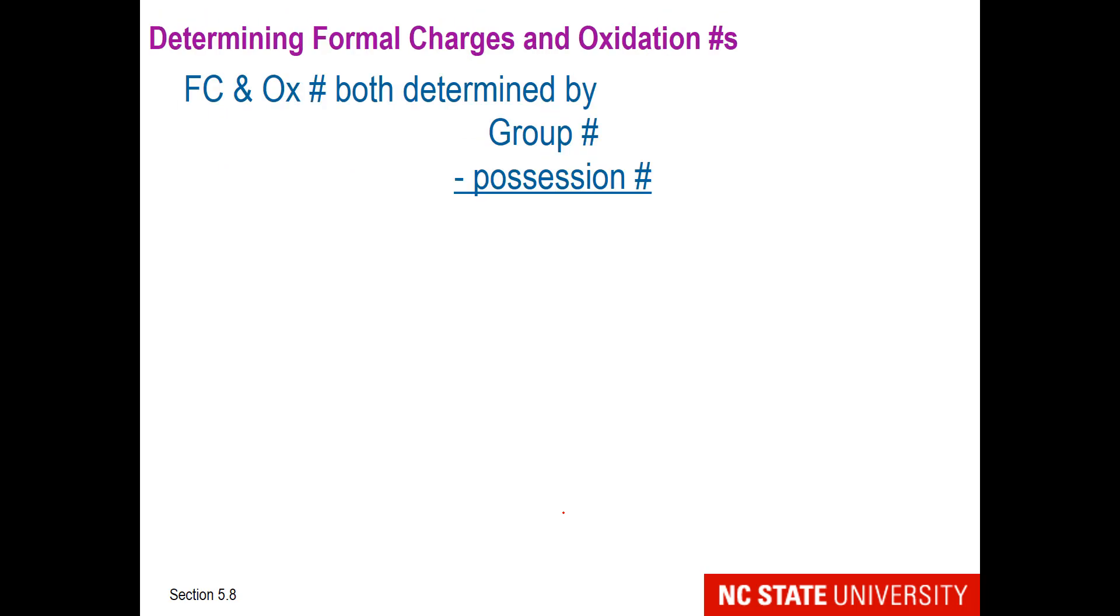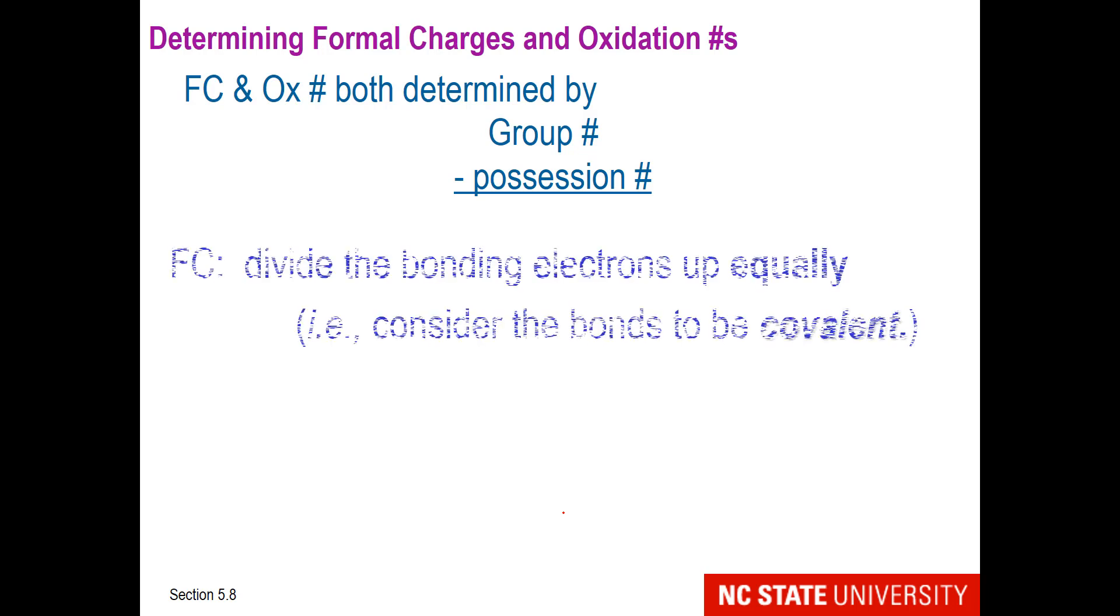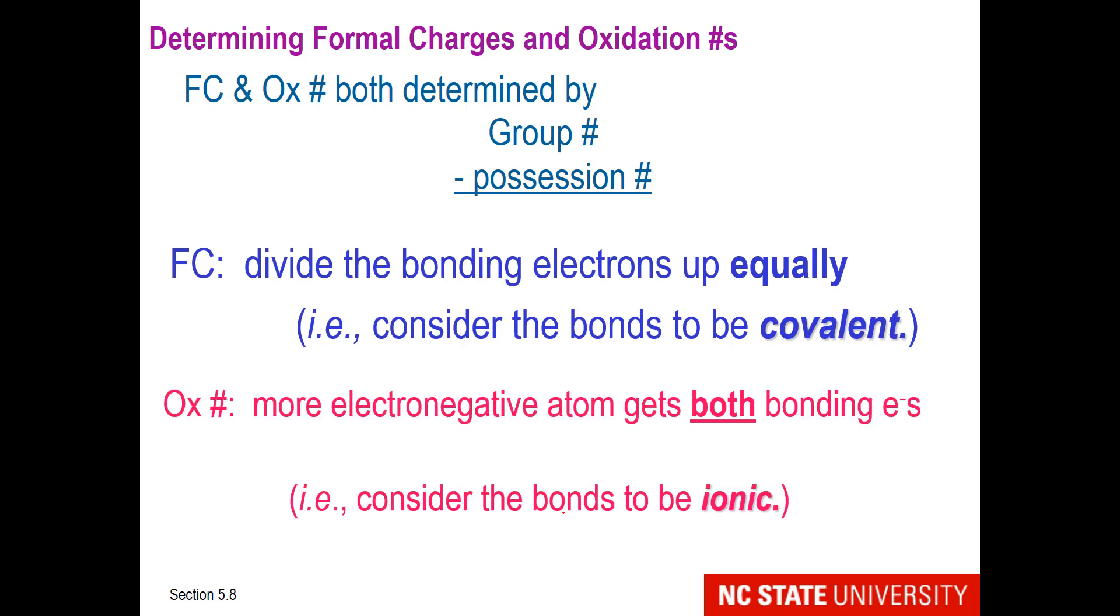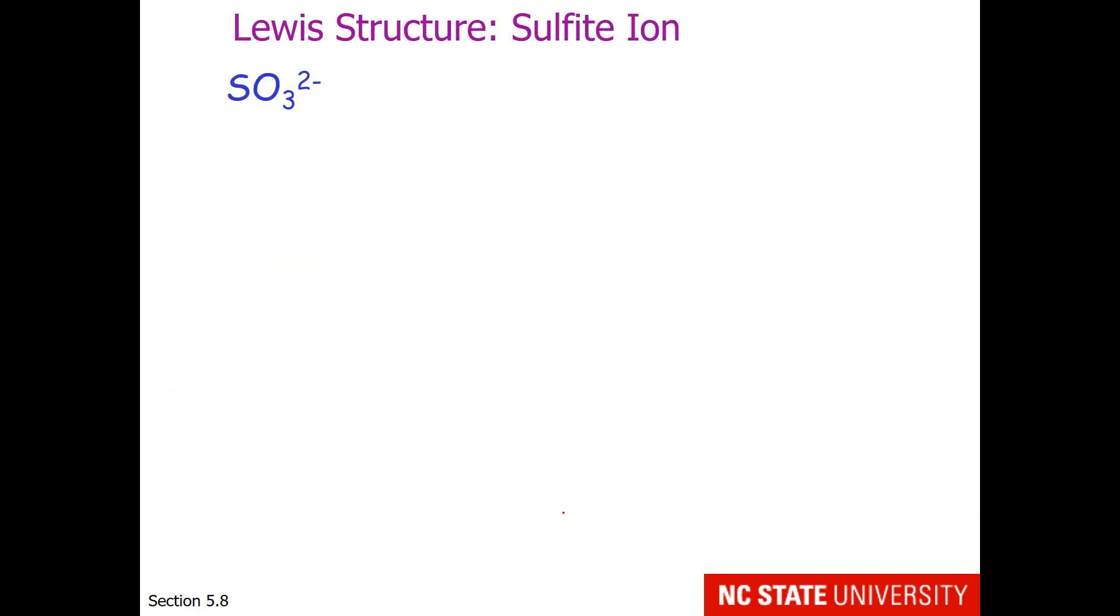Now we need to add to our Lewis structures with the idea of formal charges and oxidation numbers. Formal charges and oxidation numbers are both determined by the same formula, which is group number minus possession number. Formal charge divides the bonding electrons up equally by considering the bonds to be purely covalent. Oxidation number gives the bonding electrons to the more electronegative atom, so the bonds are considered to be ionic.